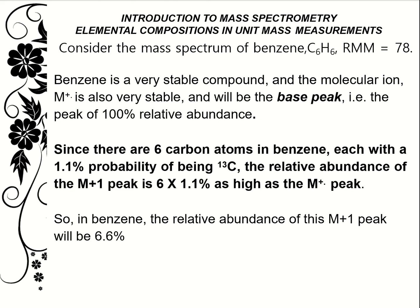Consider the mass spectrum of benzene, C6H6, with a relative molecular mass of 78. Benzene is a very stable compound, so the molecular ion M+ is also very stable and will be the base peak with 100% relative abundance. Since there are six carbon atoms in benzene, each with a 1.1% probability of being carbon-13, the relative abundance of the M+1 peak is 6 × 1.1%, giving 6.6% in benzene.